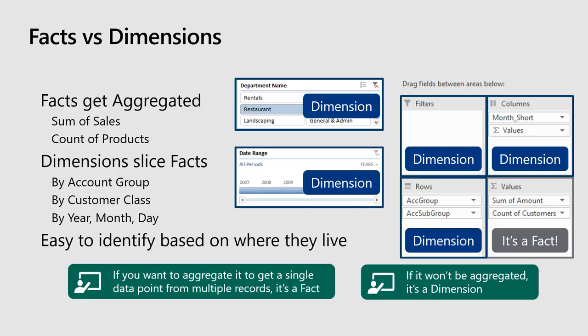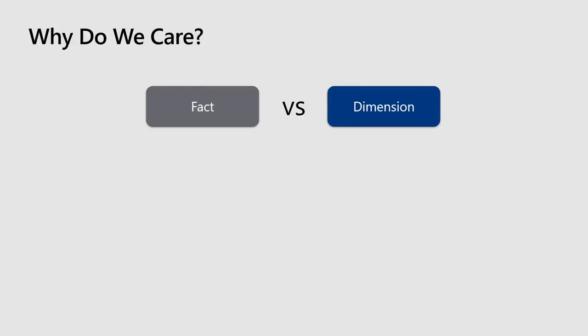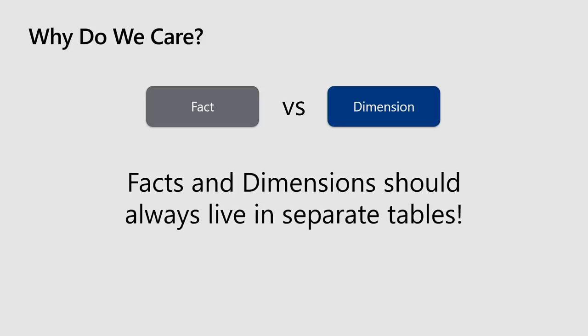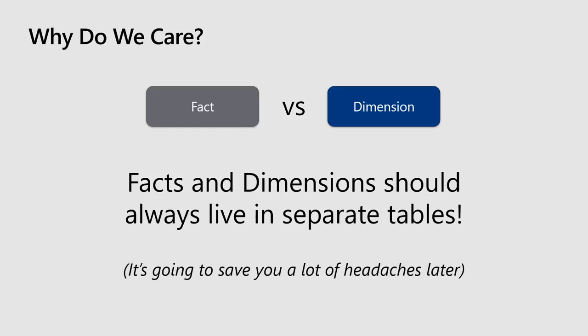So there are the two little rules, and this slide deck is actually posted online so you can download these slides later if you want higher resolution pictures. Why do you even care about facts and dimensions? Because these two things should actually live in completely separate tables when you're building a proper dimensional model. If you follow this rule, it's going to save you an awful lot of headaches. This is the number one problem I see when somebody brings me a dimensional model that's not working — they're grabbing dimensions from a fact table and throwing them into the pivot table.